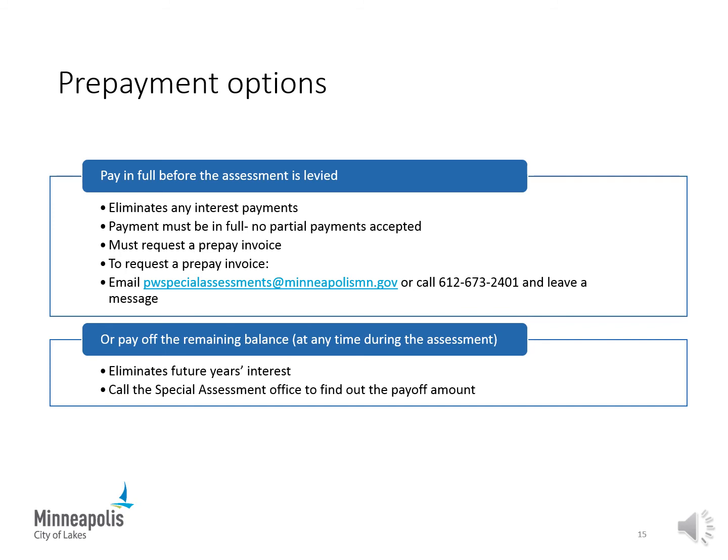If you wish to prepay the assessment to avoid paying interest, please request a prepay invoice by contacting the Special Assessment Office at the email address listed on this slide and in your public hearing notice. Payment must be in full — partial payments are not accepted. If you do not prepay the assessment, you can still pay off the remaining balance at any time during the assessment to avoid paying some of the interest. To get the payoff amount, you can contact the Special Assessments Office.